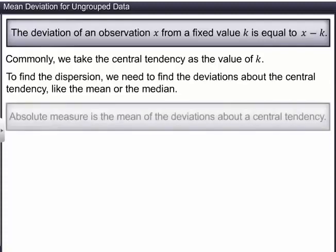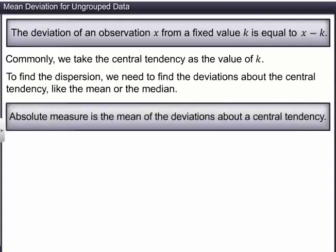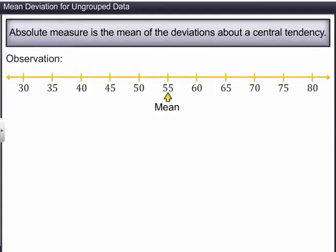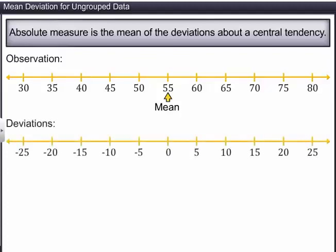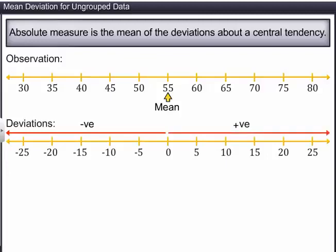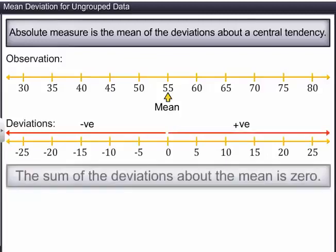The mean of these deviations gives the absolute measure of deviation. However, we know that the central tendency is the middlemost value of a given data if they are arranged in the proper order. Half of the deviations are negative and the others are positive. Therefore, the sum of the deviations about the mean is zero.